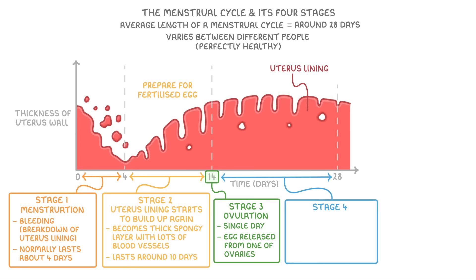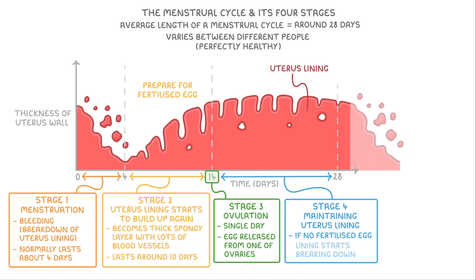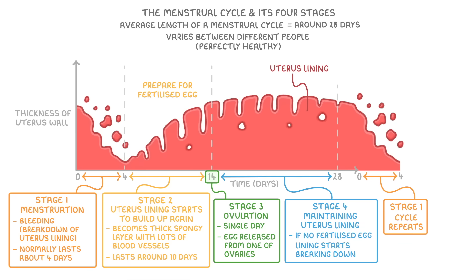Stage 4 stretches all the way to day 28 and involves maintaining the uterus lining. Once we get to the end of the cycle, if no fertilised egg has made it to the uterus, then the uterus lining starts breaking down and we go back to stage 1, and the whole cycle repeats.